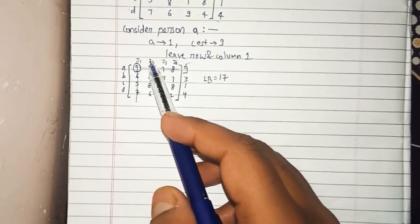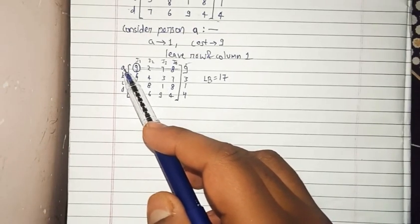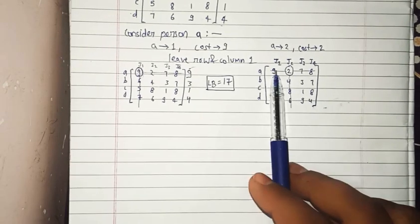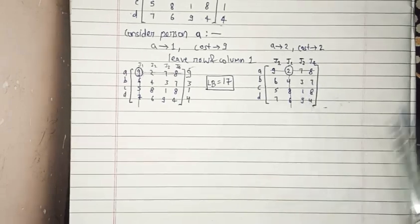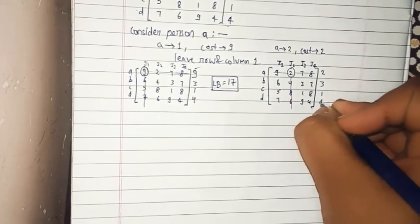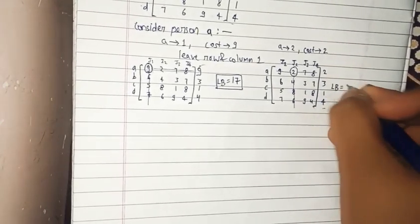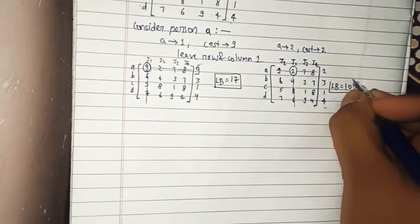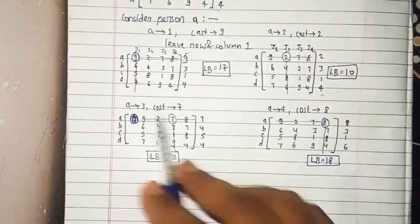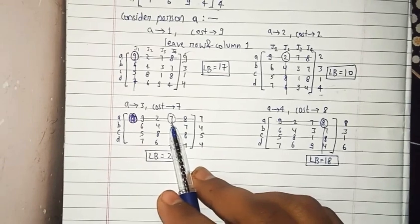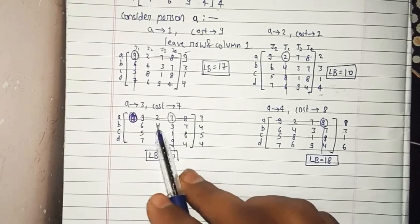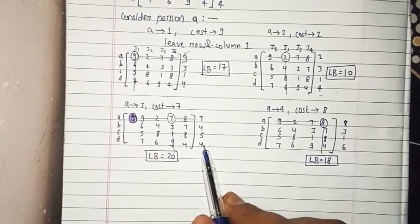Now for person A assigned to job 2, the corresponding row and column are cut. The minimums found are 2, 3, 1, and 4, with an addition of 10. Similarly, for person A assigned to job 3, the cost is 7, which is circled and removed. The minimums are 7, 4, 5, and 4, with an addition of 20.